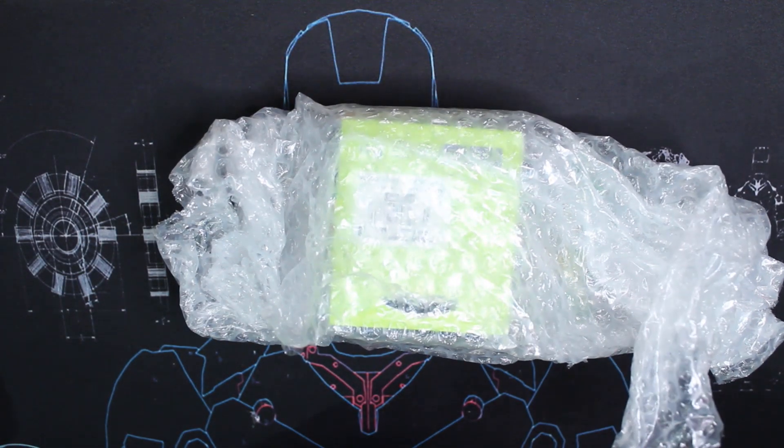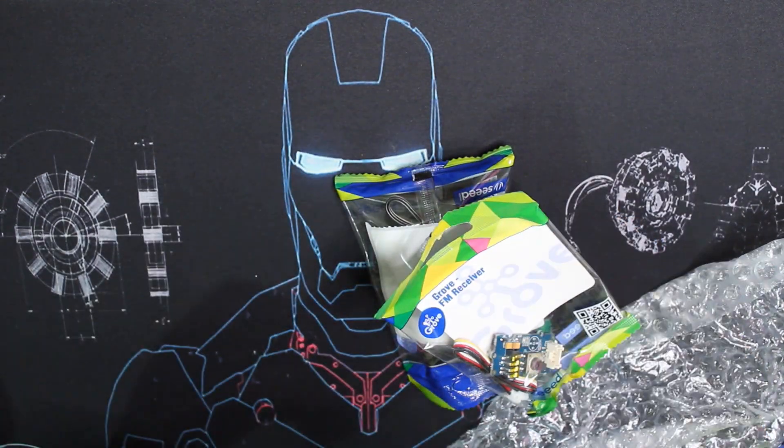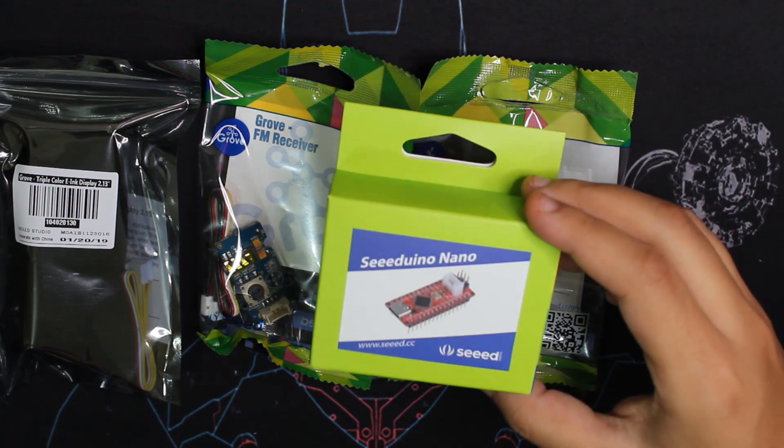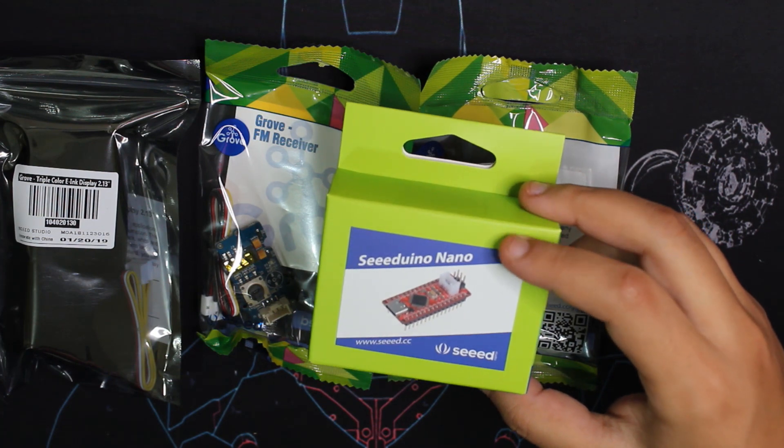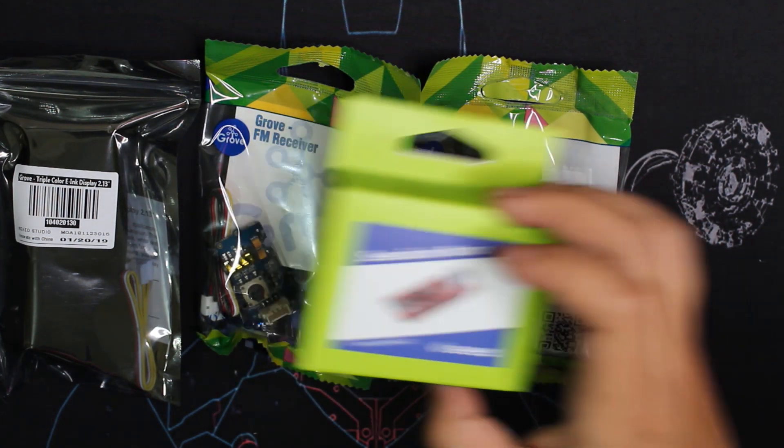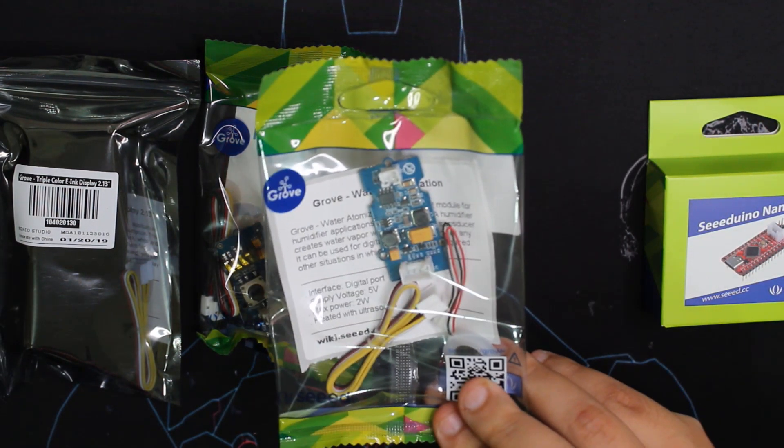Here are the four products I received. We have a Seeeduino Nano—it's like an Arduino Nano but by Seeed Studio. The packaging is always nice. Here we have a Grove module, a water atomizer.